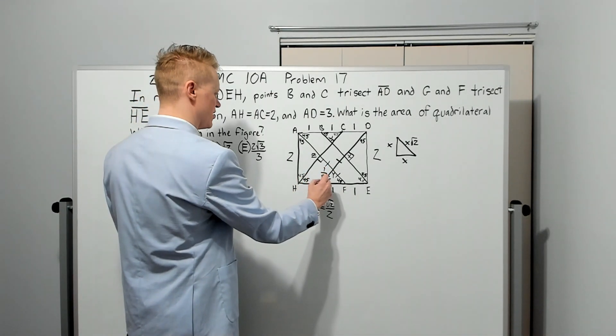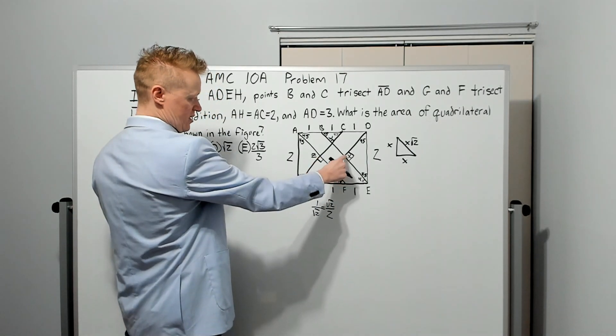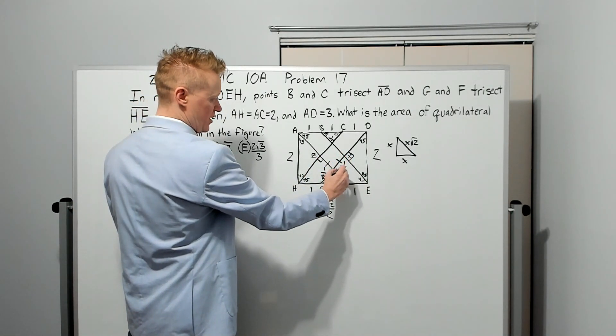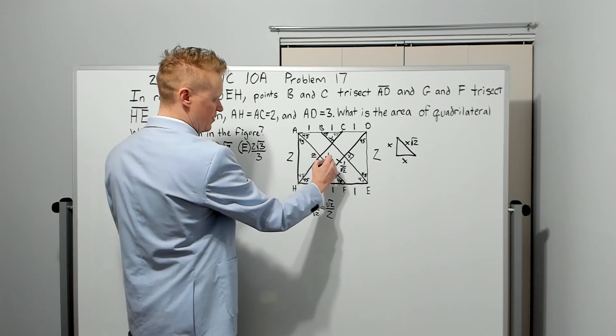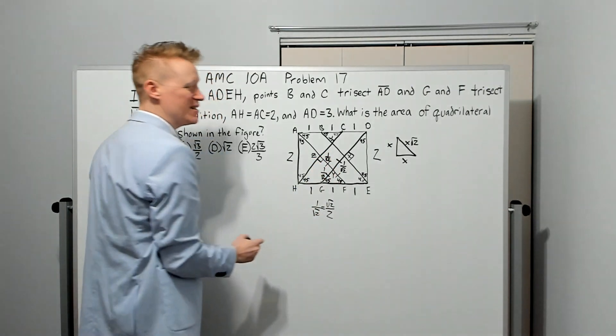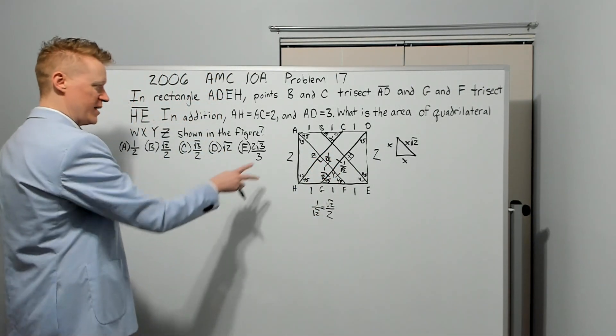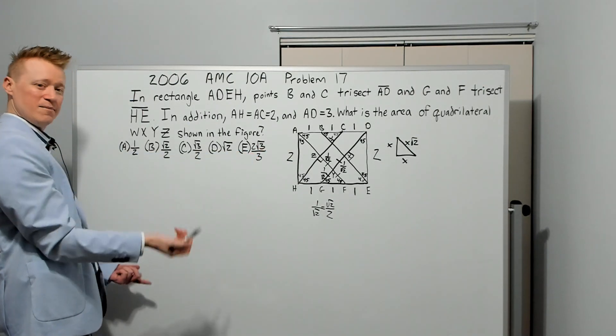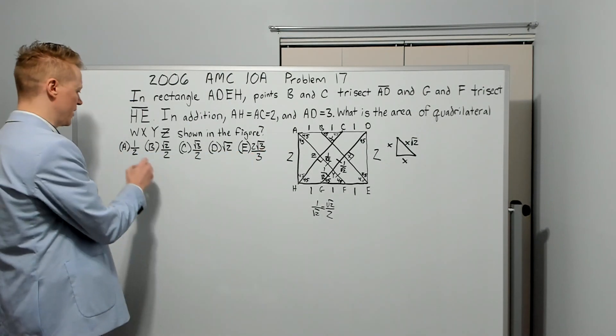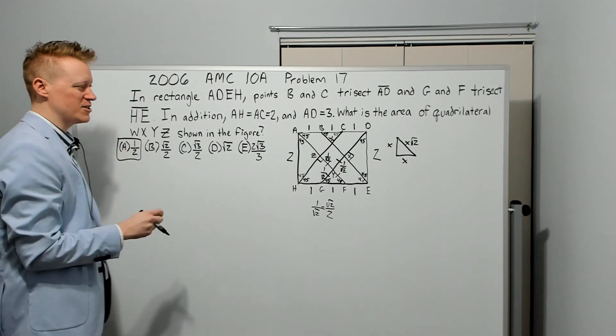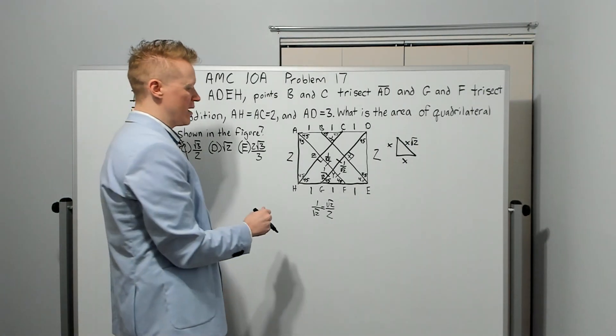Since this equals this, this will be one over root two, as will this. The area of any square is the product of its sides: one over root two times one over root two is in fact one half. The answer is going to be A, one half.